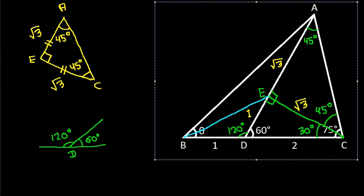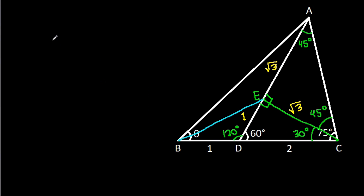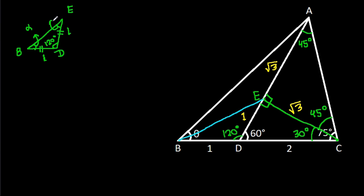In triangle EBD, this angle is 120 degrees. BD is equal to ED, that is 1. That means these two angles will be equal — suppose alpha. So alpha plus alpha plus 120 degrees equals 180 degrees, so alpha will be 30 degrees.